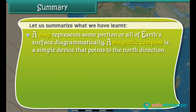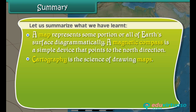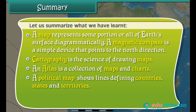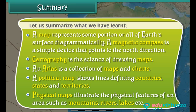To summarize: a map represents some portion or all of Earth's surface diagrammatically. A magnetic compass is a simple device that points to the north direction. Cartography is the science of drawing maps. An atlas is a collection of maps and charts. A political map shows lines defining countries, states and territories. Physical maps illustrate the physical features of an area such as mountains, rivers, lakes, etc.